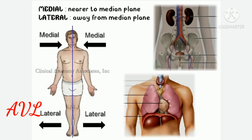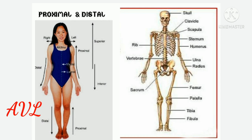Medial means towards or nearer to the midline of the body — for example, the heart is medial to the lungs. Lateral means away from the midline or towards the outside of the body — for example, the kidneys are situated lateral to the vertebra. Proximal means nearer to the shoulder joint or hip joint, while distal means further away from the shoulder joint or hip joint.